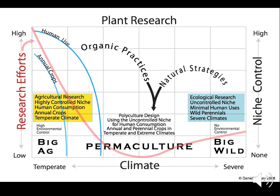I wanted to show this chart, which I had to produce in order to get my bachelor's degree and help my advisor understand what I was trying to do — working in an area that wasn't about big ag or wildlife management, but somewhere in the middle. On the left you see research efforts for temperate lands; on the right, severe climates where niche control is high or low. There's a red line going across.